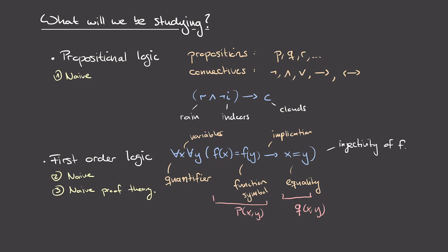This more formal treatment will require specifying much more precisely what we're talking about and will be more complicated than the naive version. In the second part of the course we'll be doing proper propositional logic — propositional logic done right — and the same for first order logic. If you only stay for the naive parts, you'll have learned how to prove first order logic formulas, which is basically all you need to construct proper mathematical proofs. But if you want to understand why these procedures work and how to think about them properly, stick around for the later parts where we'll dive deep into the theory and actually prove these things properly.